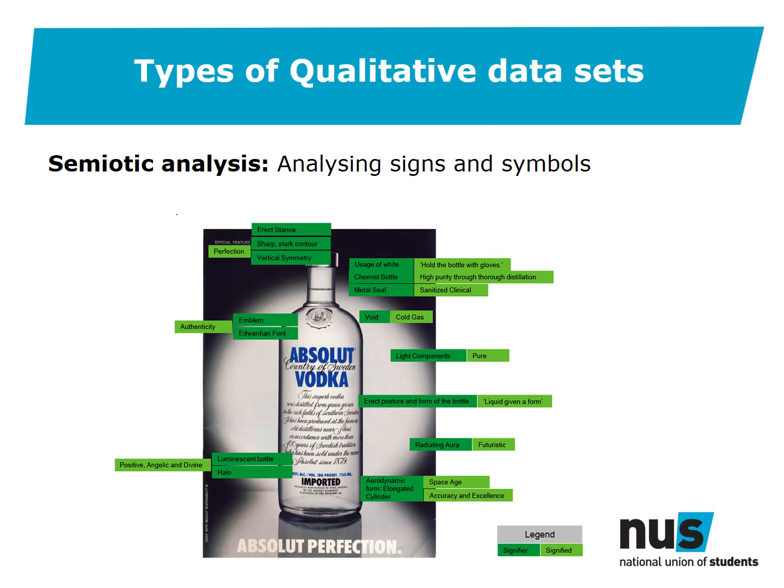There are several types of qualitative data sets. Semiotic analysis involves analysing signs and symbols. For example, a participant captures an image and is filmed whilst talking through what the image means to them. It's important to note that the analysis is of the picture and its meaning in a particular social context.